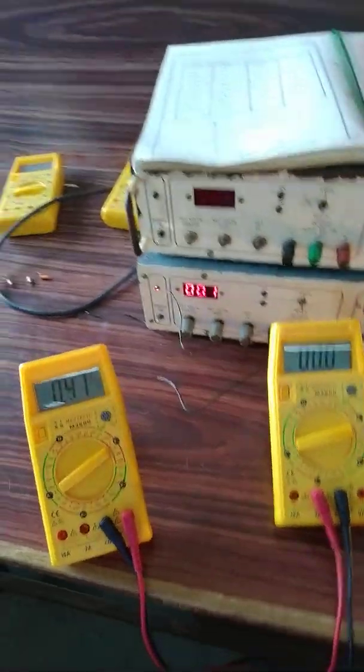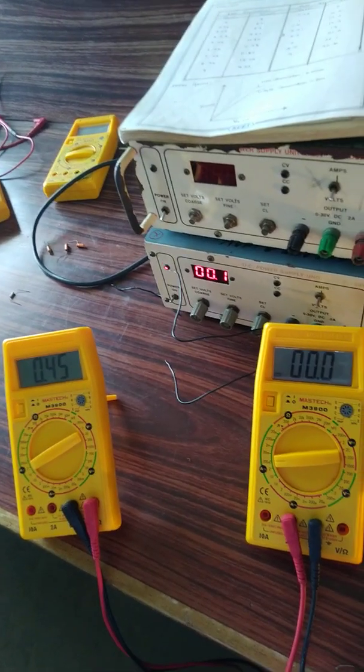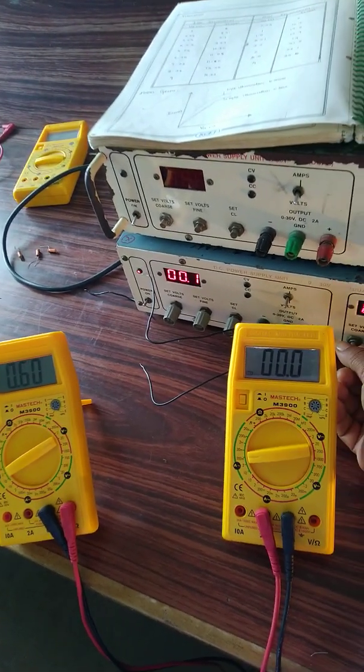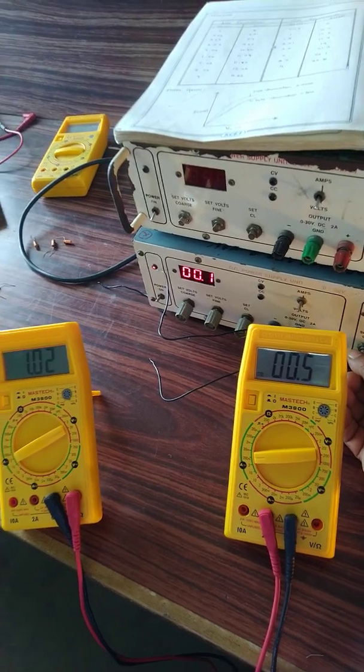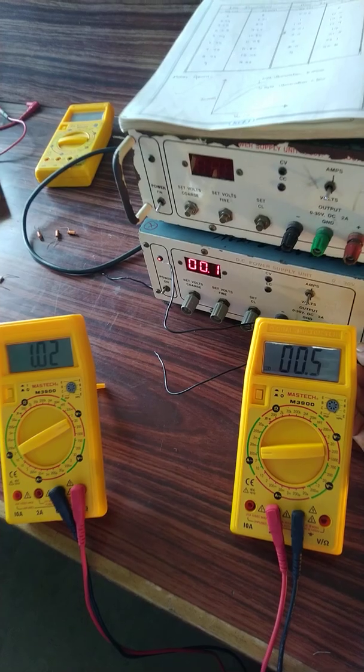So we will start with the experiment. We will start with the voltage, the applied voltage. Now 0.46, 0.0. Now we will start with the reading: 0.52, 0.05, 1.02, 0.5, 1.07.